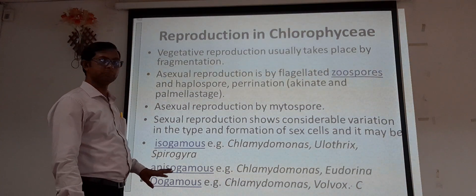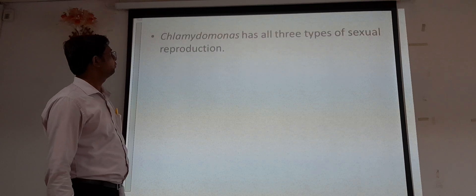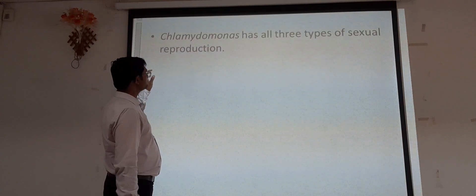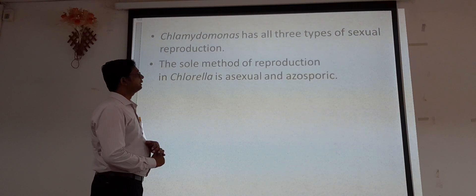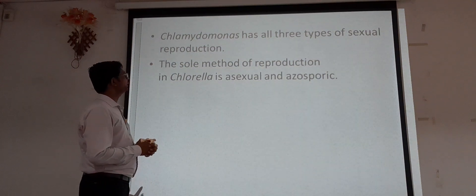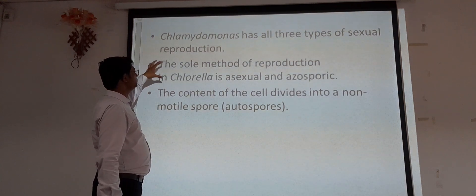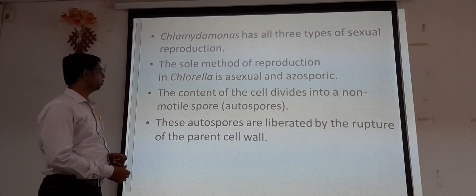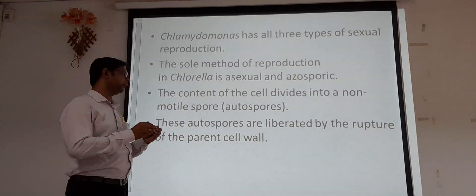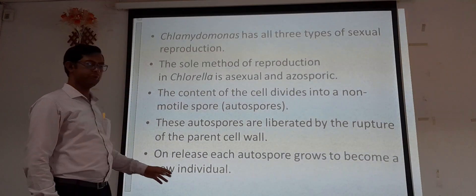These are the types of sex cell formation in Chlorophyceae organisms, and Chlamydomonas exhibits all three. The sole method of reproduction in Chlamydomonas also includes asexual reproduction via autospores. The cell content divides into non-motile spores called autospores, which are liberated by rupture of the parent cell wall and each autospore grows to become a new individual.